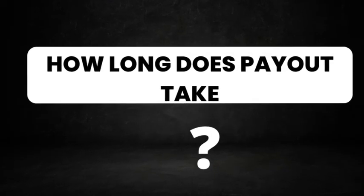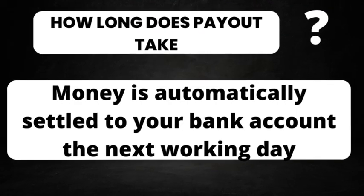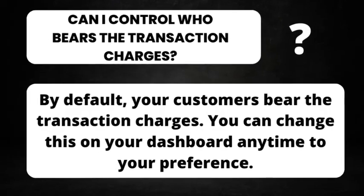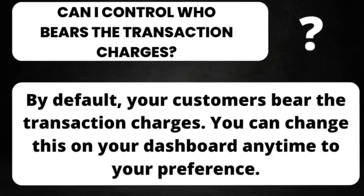How long does payout take? Money automatically settles to your account the next working day, so it takes about 24 hours for the money to settle. Once the money settles in your account, you can withdraw it to your personal bank account. It's very easy and straightforward. Can you control who bears the transaction charges? By default your customer bears the transaction charges, but you can change this on your dashboard any time based on your preference.